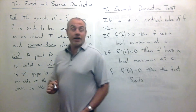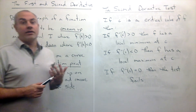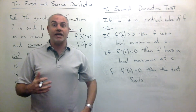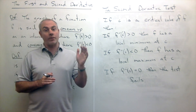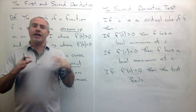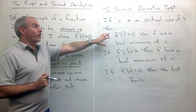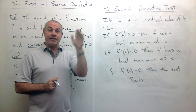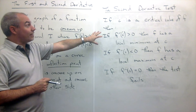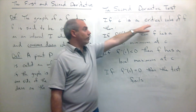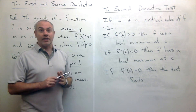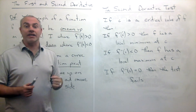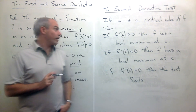We have another test for relative or local maxes and mins. Remember, the point of this whole section is to locate places where we have local maxes and minimums — the hills and valleys of the graph. We have the first derivative test where we find critical points, plot them on a number line, and test points in between. The Second Derivative Test is a bit different: we still find the critical values, but then we plug those critical values into the second derivative.